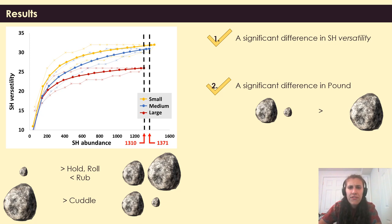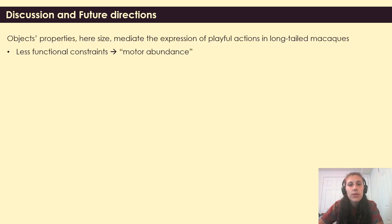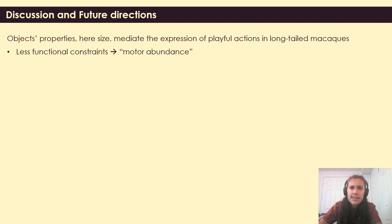Similarly, we found that other stone handling actions were constrained by stone size in their expression. Specifically, small stones were preferentially used while holding and rolling stones, whereas rubbing actions were preferentially expressed with medium and large stones. Large stones were preferentially used for cutting compared to medium and small stones. Taken together, our results suggest that visual affordances — here object size — play a major role in influencing object-directed actions. However, the constraints may be weaker and more relaxed in object play than in tool use, as suggested by the flexibility observed in pounding actions where no statistical differences were detected between small and medium stones. Additionally, we observed behavioral variants that were macrostructurally similar to pounding, suggesting a possible motor abundance in playful action compared to more functionally constrained manipulation.